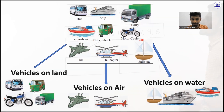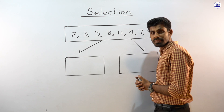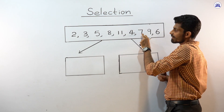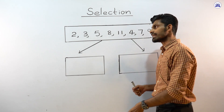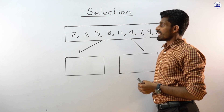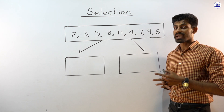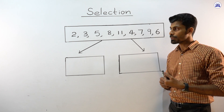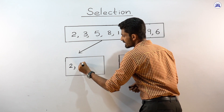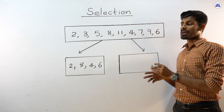Let's move to the next session. In this example you can see some numbers in a box: two, three, five, eight, eleven, four, seven, nine, and six. Numbers like two, eight, four, and six — we can divide them by two without a remainder. What are their common characteristics? We can divide by two without a remainder, so these are called even numbers.